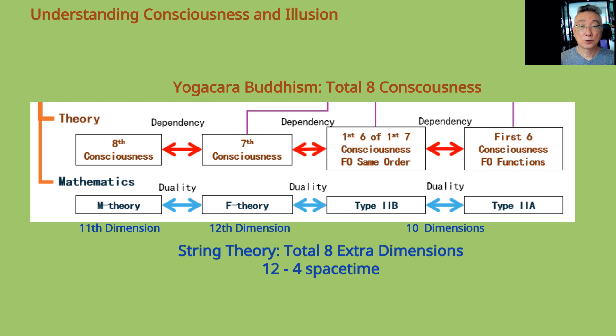However, there are a total of eight consciousness in Yogacara Buddhism, where each of the eight has a pair of visual function and corresponding image function. In string theory, with the extra dimensions of M-theory's eleventh dimension and F-theory's twelfth dimension, there are a total of eight extra dimensions, after minusing four space-time dimensions.